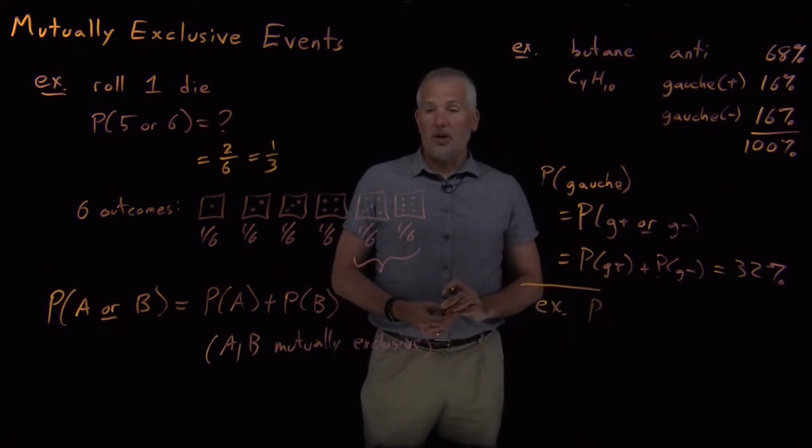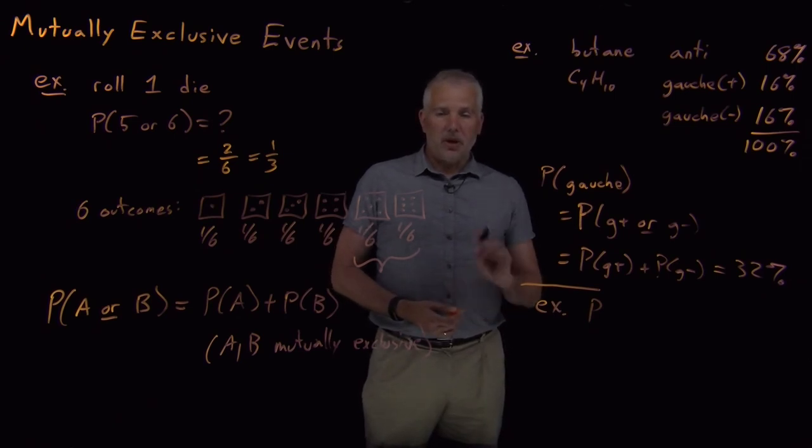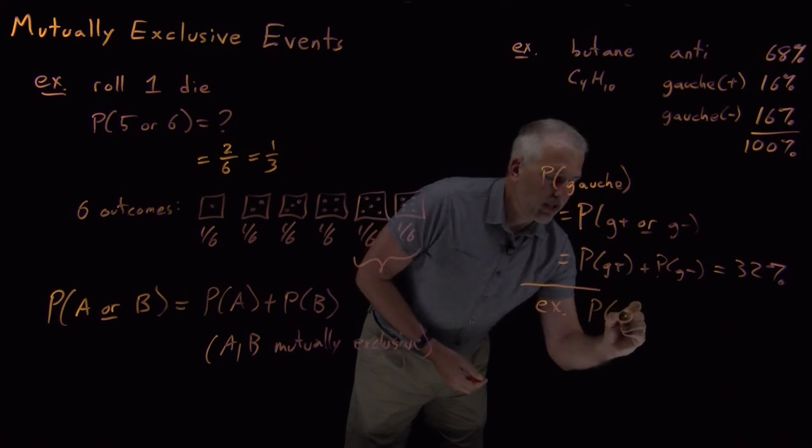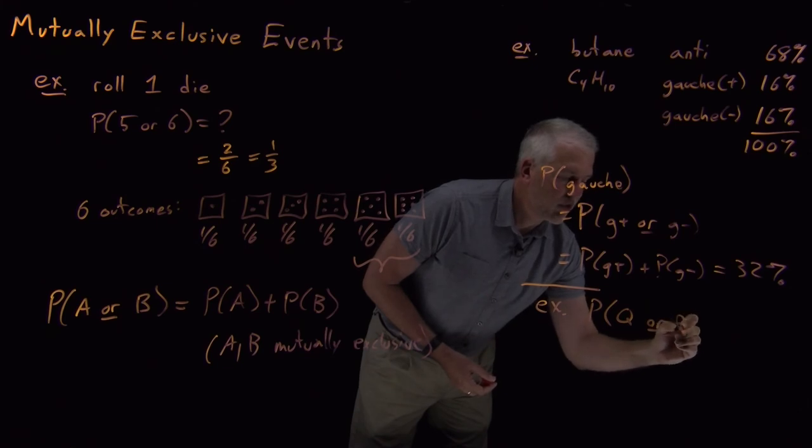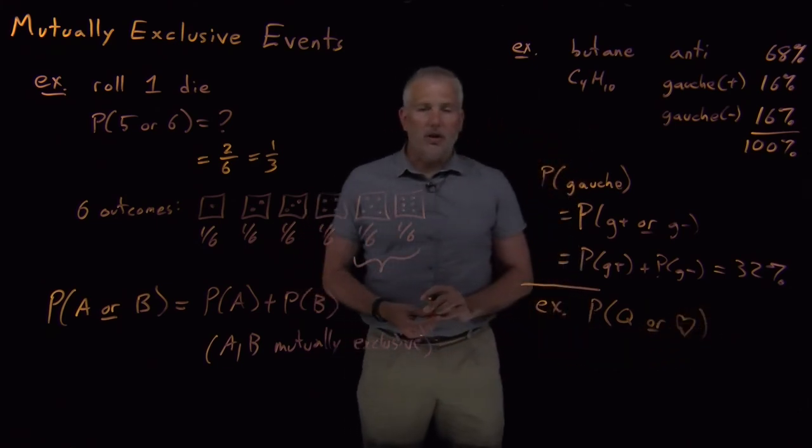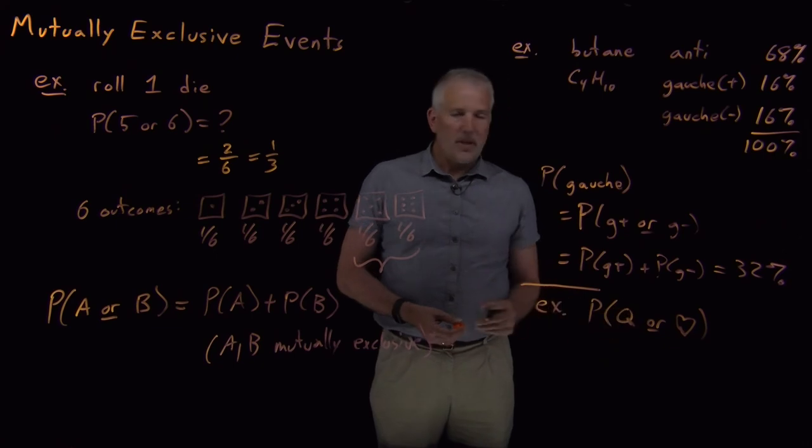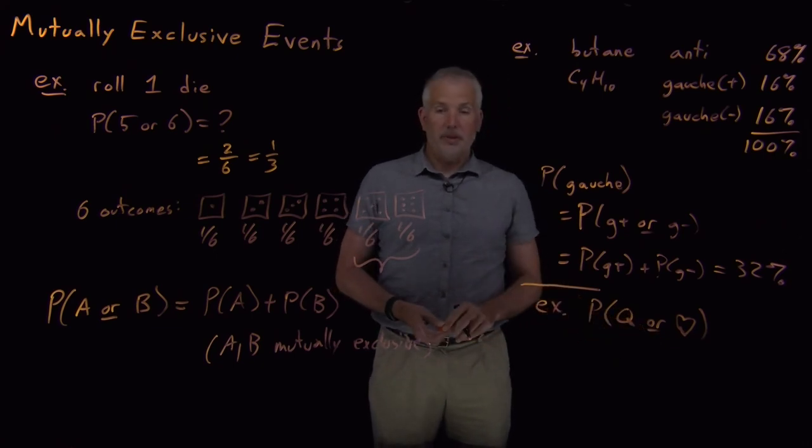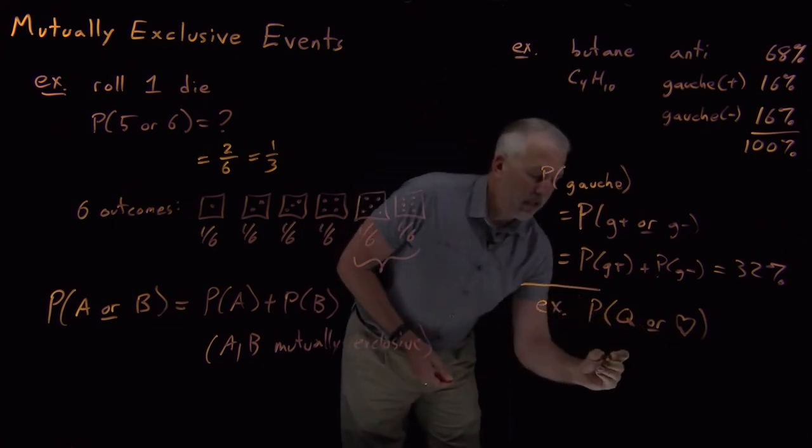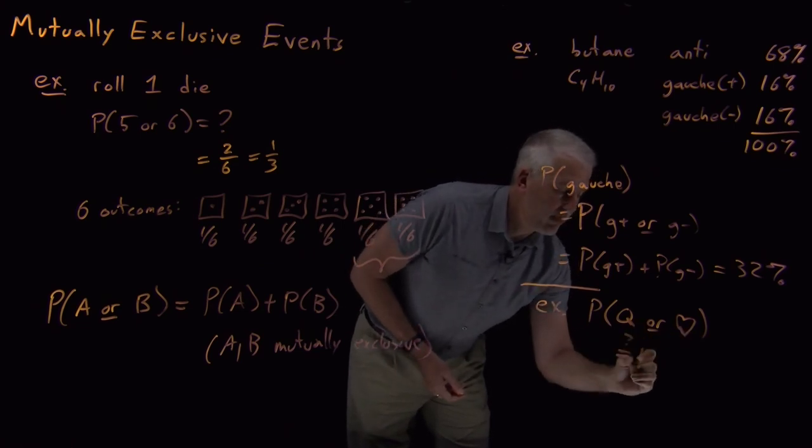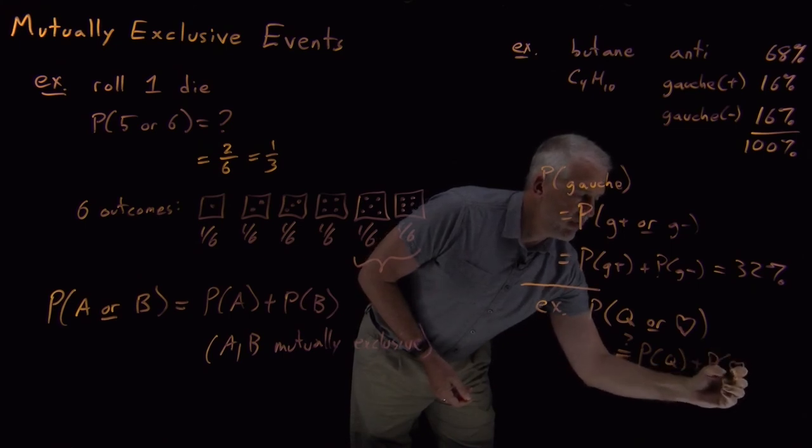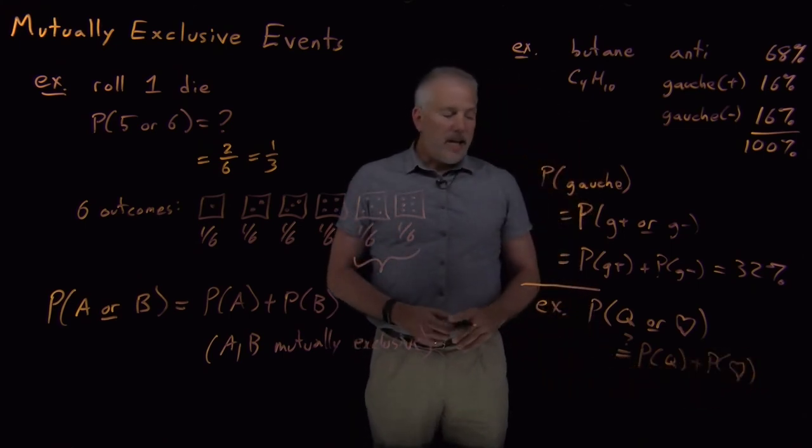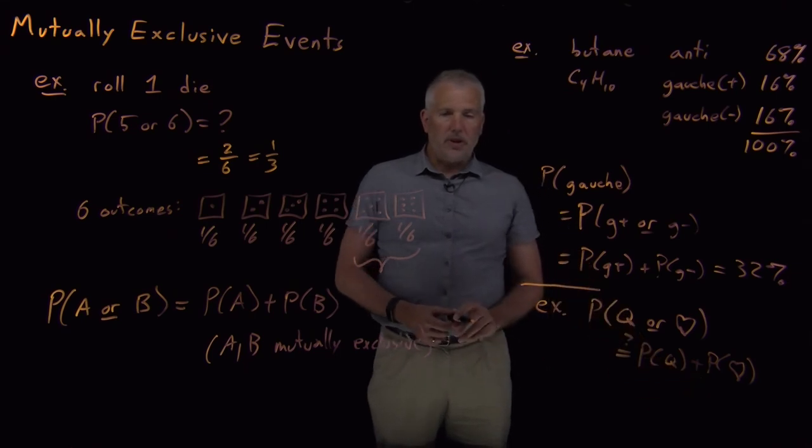We'll do an example with cards instead of with dice. Let's say out of a normal deck of playing cards, I draw one card and I want to know what's the probability that I've drawn a queen or that I've drawn a heart, a card with a suit of hearts out of that deck of cards. So that sounds like an or problem. It sounds like I might want to say add the probability of drawing a queen to the probability of drawing a heart.